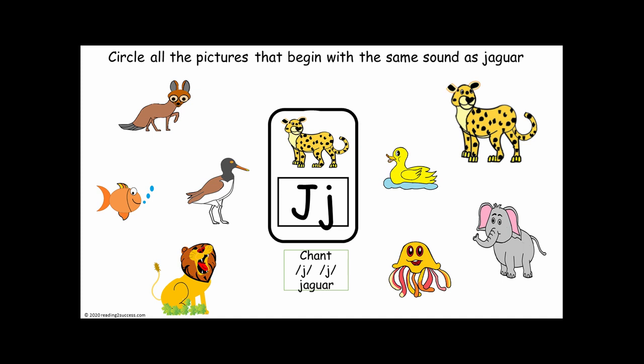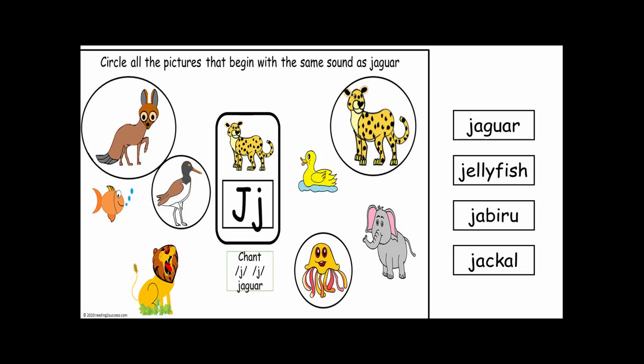Now it's time for kids to circle all the pictures that begin with the same sound as Jaguar. The first picture is a J, J, Jaguar. Then we have D, D, Duck. E, E, Elephant. J, J, Jellyfish. Lion. J, J, Jabiru. Fish. And J, J, Jackal. The answers are: J, J, Jaguar. J, J, Jellyfish. J, J, Jabiru. And J, J, Jackal.